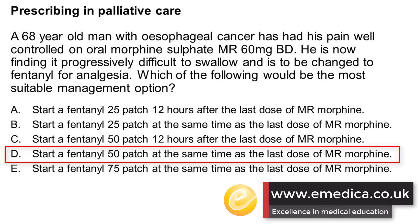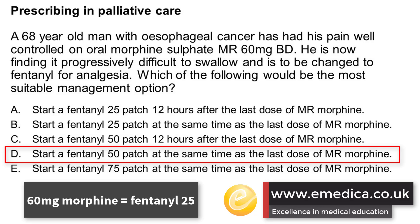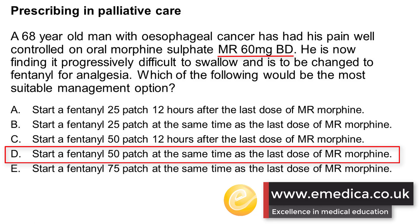There are a couple of tricky things in this question. The first is that the equivalent dose: 60 milligrams of oral morphine in 24 hours is approximately equivalent to a fentanyl 25 patch. But this patient was on 60 milligrams modified release morphine twice daily, so their total 24-hour dose is 120 milligrams, meaning they need a fentanyl 50 patch.